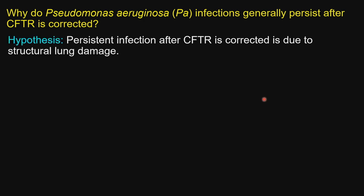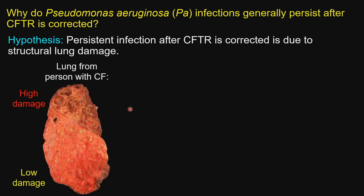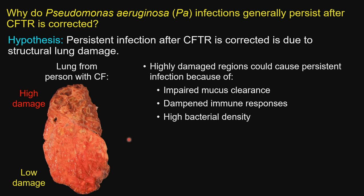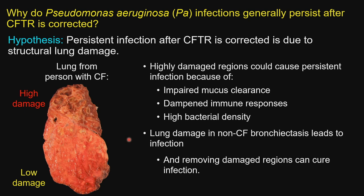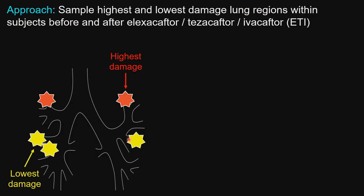A key question motivating research in Pradeep's lab is: why do Pseudomonas aeruginosa infections persist after CFTR is corrected? Our hypothesis is that persistent infection after CFTR correction is due to structural lung damage. Here I'm showing an example lung from a person with CF with areas of high and low damage. We thought that high-damaged regions may cause persistent infection because of impaired mucous clearance, dampened immune responses, and higher bacterial density.